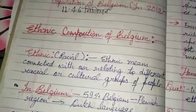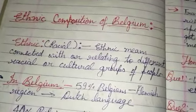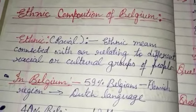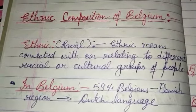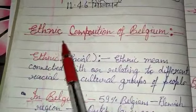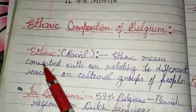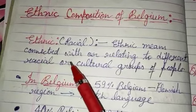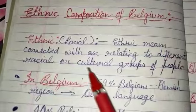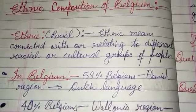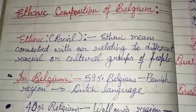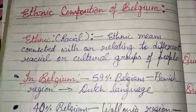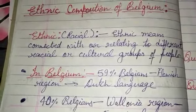Now we shall discuss the ethnic composition of Belgium. In simple language, we can say this refers to the population composition of Belgium. The word ethnic — its literary meaning is racial, relating to different racial or cultural groups of people. So in this section of the chapter, we shall discuss what is the racial composition of Belgium and which peoples of which races are living in Belgium.